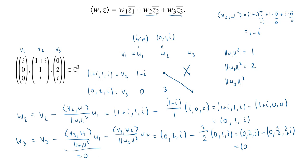Subtracting, we have 0, 2 minus 3/2 is 1/2, and i minus 3/2 i is negative 1/2 i. There we go, we've found our W3: 0, 1/2, negative 1/2 i.